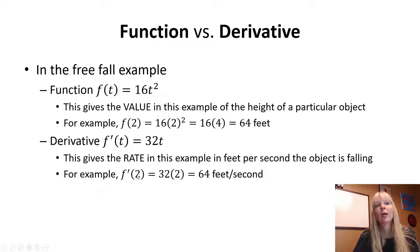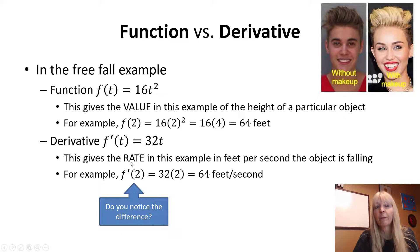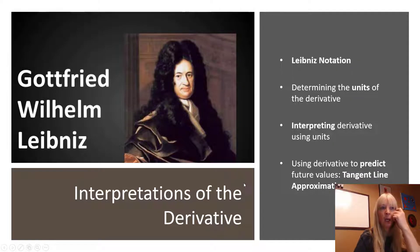Notice the difference: if I plug two into the function, I get the value. If I plug into the derivative, notice the difference - that little prime, without makeup, with makeup - this is a rate. This is very important, and this is why you always have to remember your units are going to be a rate, so something per something. In this case, feet per second.